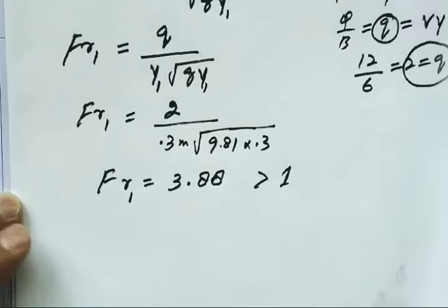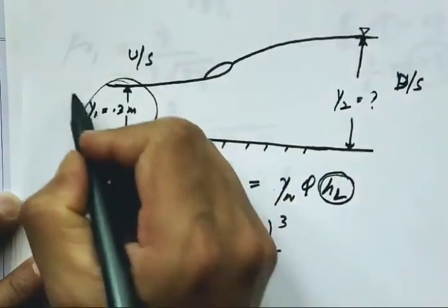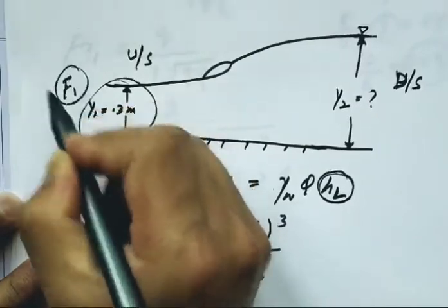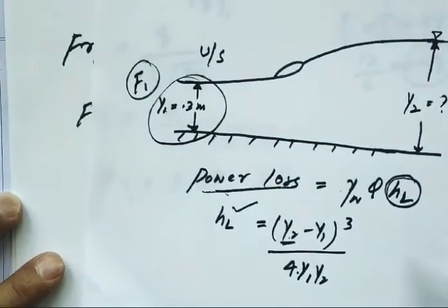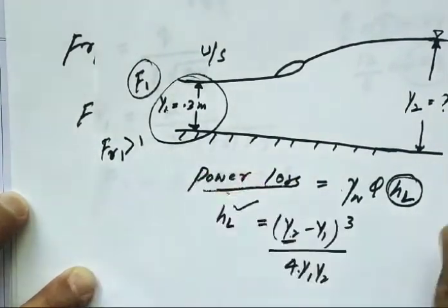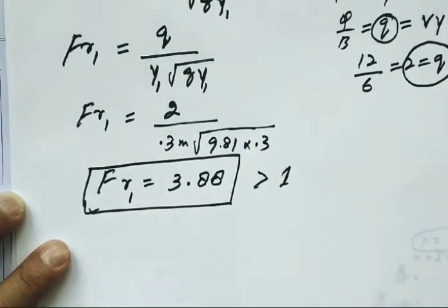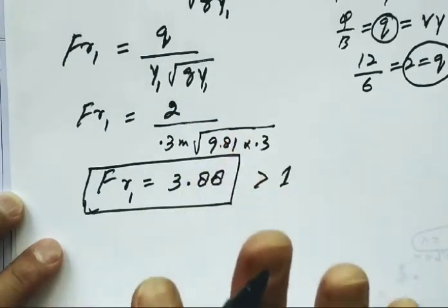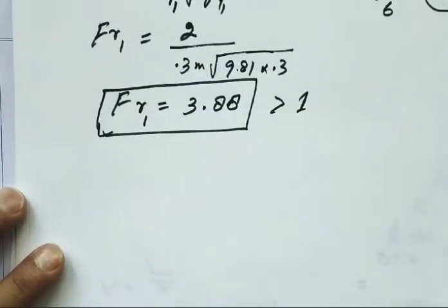F1 equals 3.88, which is greater than 1. This proves our statement that the Froude number F1 for supercritical flow is greater than 1. Now we can easily calculate y2.